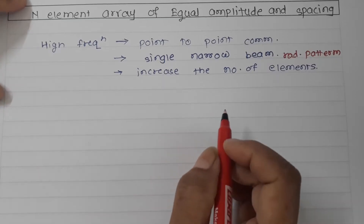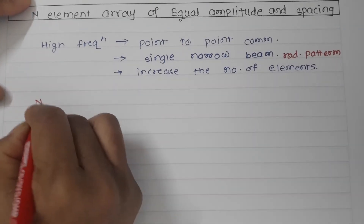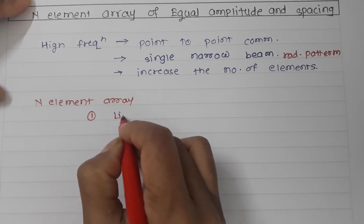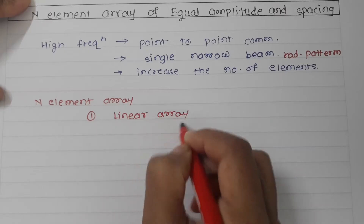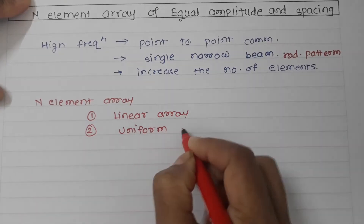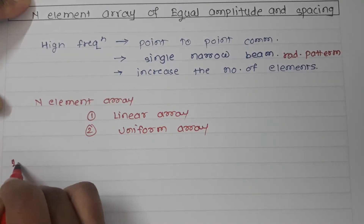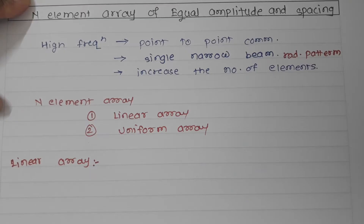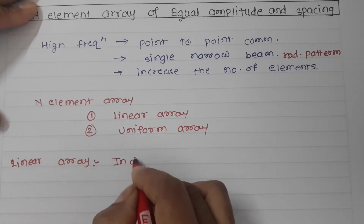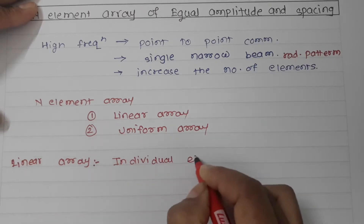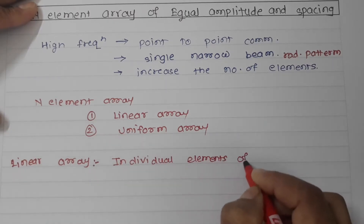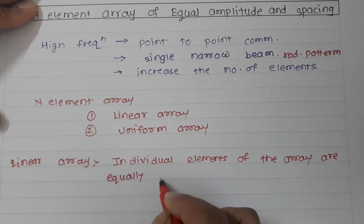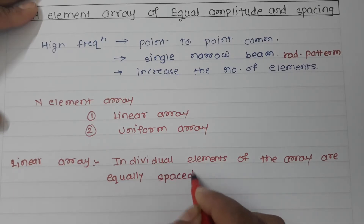There are two terms related to the N-element array. The first term is the linear array, and the second term is the uniform array. The linear array is defined as an array where the individual elements are equally spaced along a line.